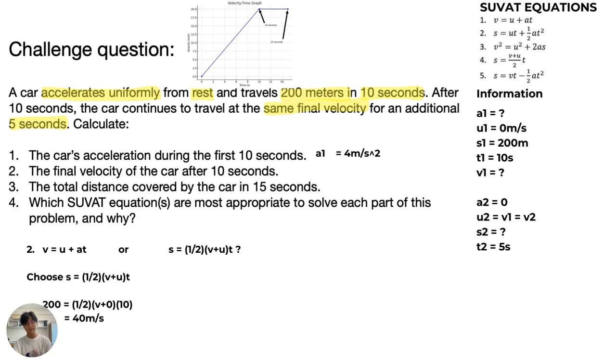Now question two - this is also the same thing. We have to find the final velocity. We have the initial velocity, displacement, time, and we also found the acceleration. So we actually have more information, which means we have multiple choices of equations to choose from: v = u + at, or we can choose s = ½(v + u)t.